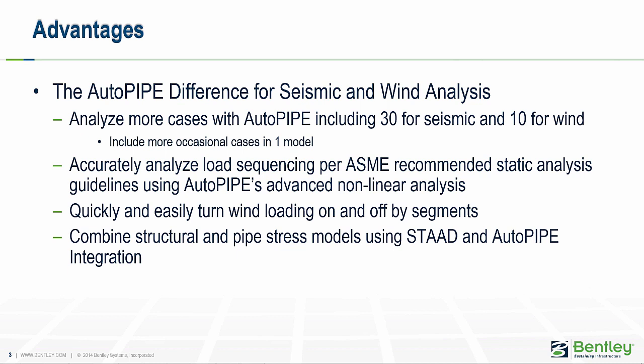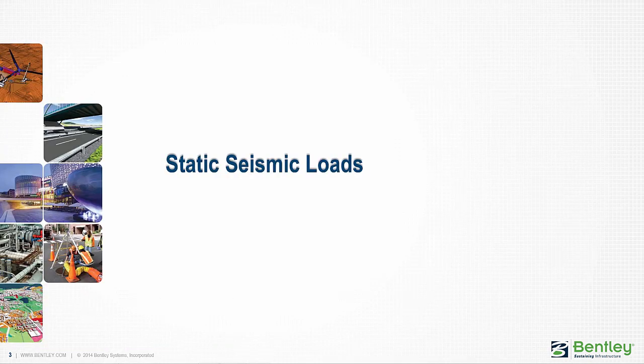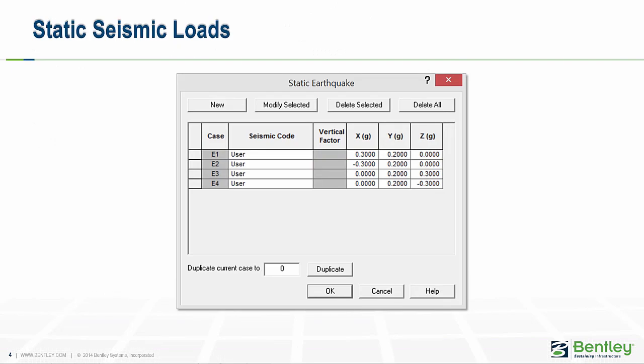Now let's jump into today's topics, starting with static seismic loads. When Load Static Earthquake is selected, the static earthquake dialogue is displayed. This dialogue enables the user to define static earthquake load cases where forces are generated as multiples of the gravity load in the global x, y, and z directions. It's important to understand that because earthquake loads are bidirectional, separate cases may be required to consider the effect in both directions, especially if gaps are considered in the analysis.